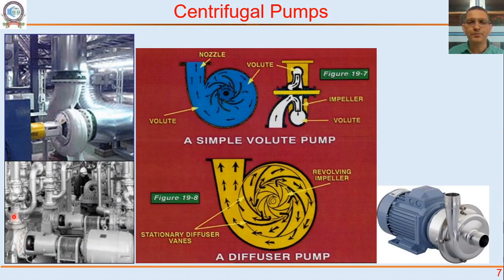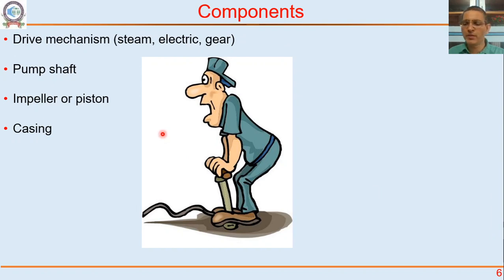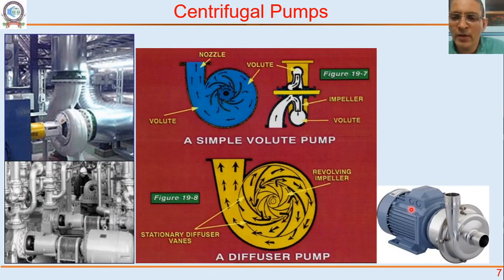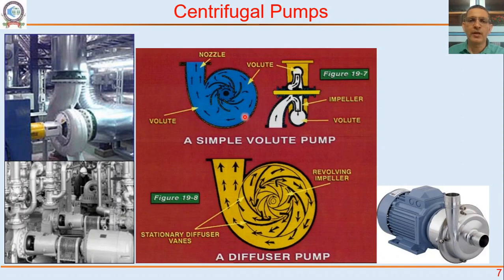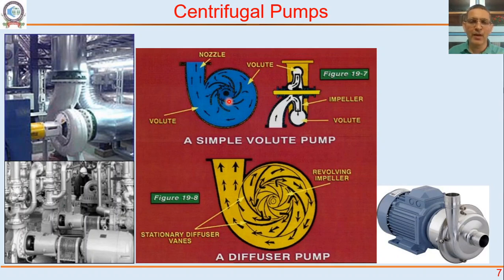This is how a centrifugal pump looks in cross-section. If I take a cross-section and see the elevation, the outer casing is called the volute. The thing rotating inside is called the impeller. Notice that the impeller is eccentric to the volute — they do not have the same center of rotation, they do not have the same axis. The impeller is located eccentrically, and we will see why in just a while. The fluid comes in at the eye of the impeller.